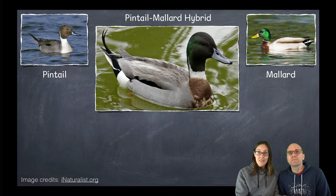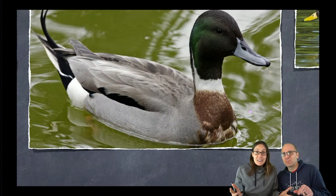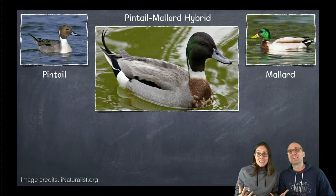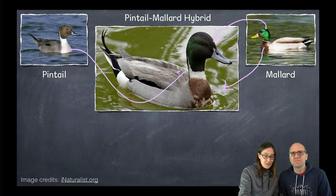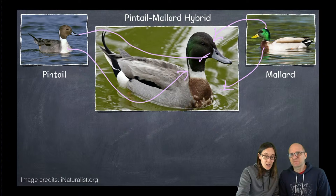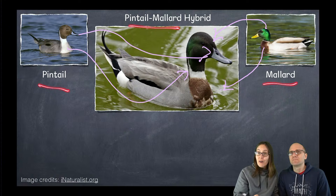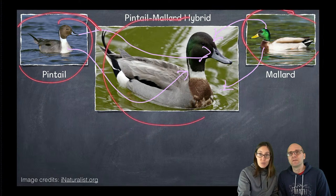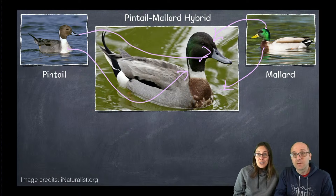So what is this? It's got a green head, but a kind of a blue bill, and kind of a pokey tail, and white and brown on the front. It's a pintail-mallard hybrid. Scientists face questions like this all the time. Should we call all three of these ducks just variations of a duck? Or should we call these two different species? Or should they be three different species? These are the tricky questions that scientists get when they're studying species.